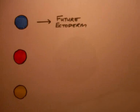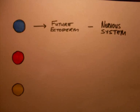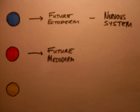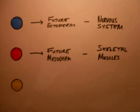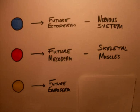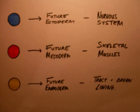Gastrulation is the process which gives rise to the three germ layers in the cell. The ectoderm, shown in blue, will go on to form the nervous system. The mesoderm, shown in red, will form the skeleton and muscles. And the endoderm, shown in yellow, will form the lining of tracts and organs such as the lungs.